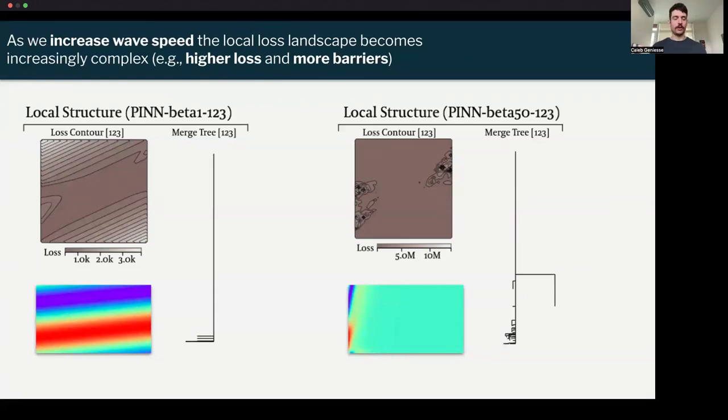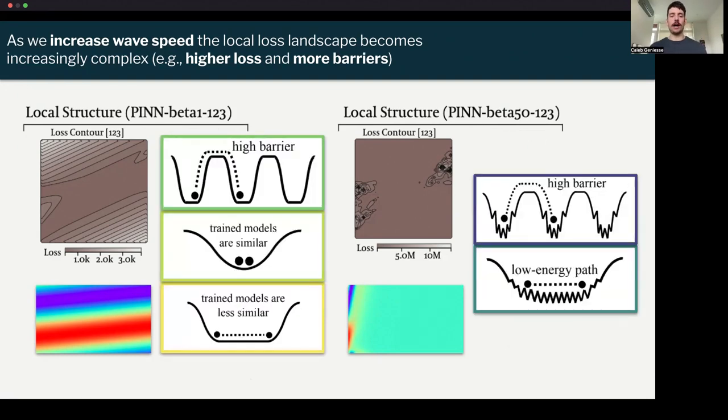When we go into our LossLens framework, we can look at the local structure. One thing we can see is that on the left, I'm showing the low wave speed, and on the right, I'm showing the higher wave speed. We can see that as we increase the wave speed, the local loss landscape becomes increasingly complex. We see higher loss and more barriers between them. We're also showing what's called a merge tree that captures saddle points and minima to sort of highlight some of the structure that isn't seen in the contour plot. We can map on those toy models that I talked about to show which possible models correspond to each. We can see that the model that succeeds may correspond to these smoother structures, where the model that fails corresponds to maybe a rougher landscape.